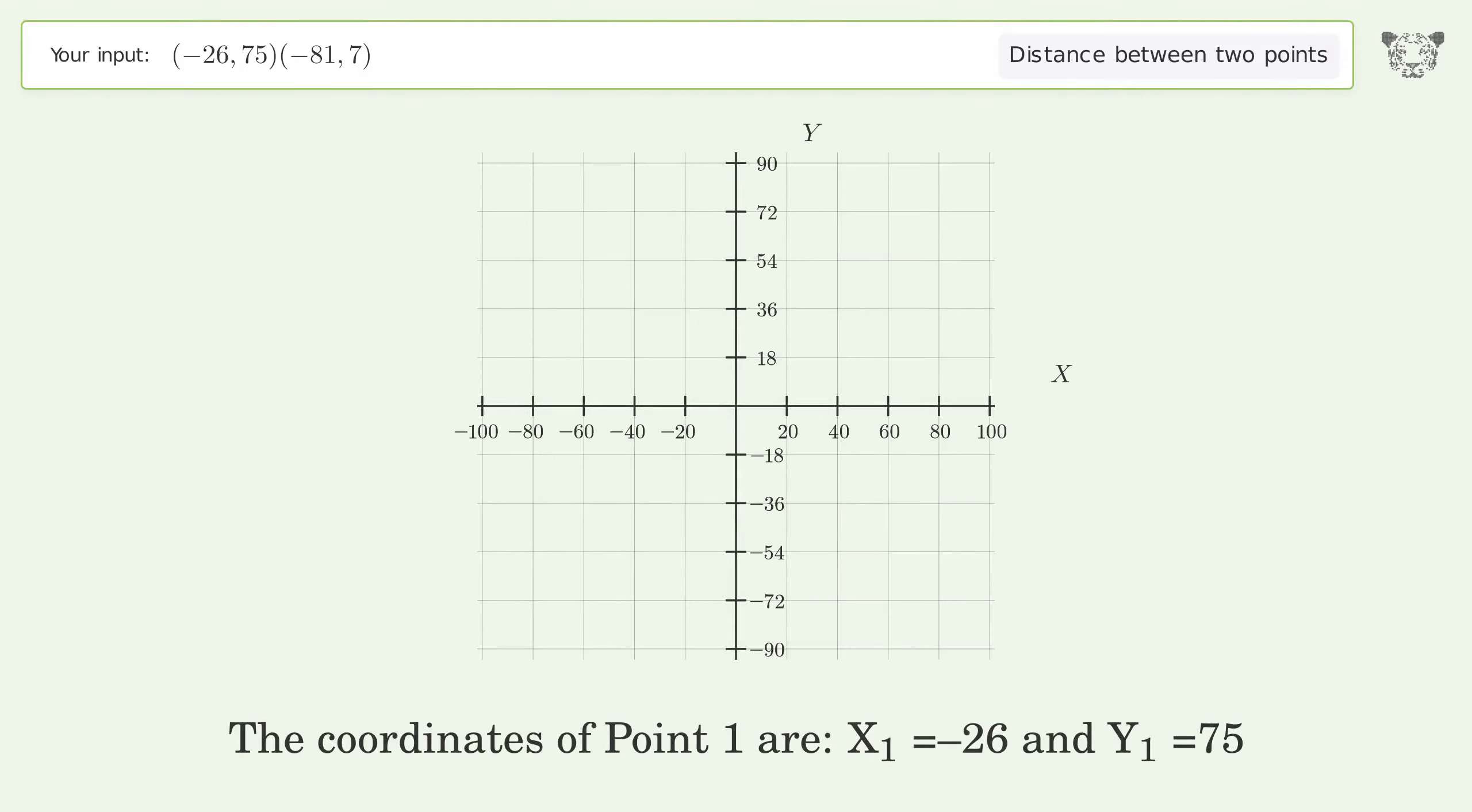The coordinates of Point 1 are x1 equals negative 26 and y1 equals 75. The coordinates of Point 2 are x2 equals negative 81 and y2 equals 7.